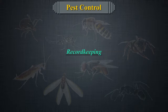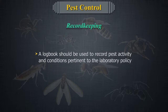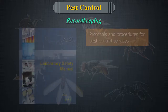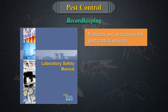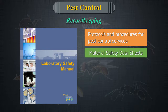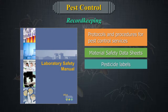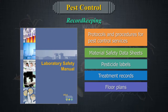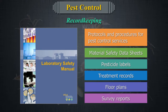Record Keeping. A logbook should be used to record pest activity and conditions pertinent to the laboratory policy. It may contain protocols and procedures for pest control services in that facility, material safety data sheets on pesticides, pesticide labels, treatment records, survey reports, etc.